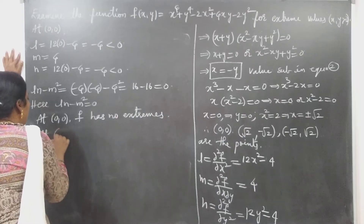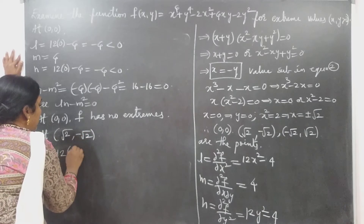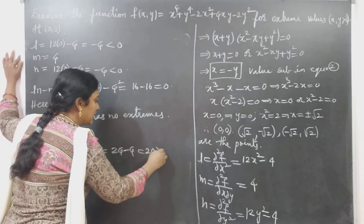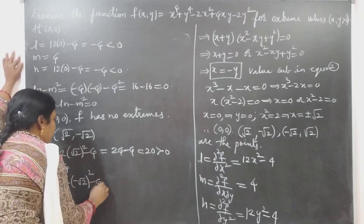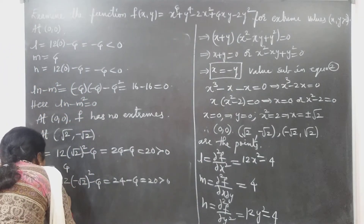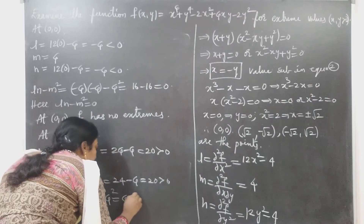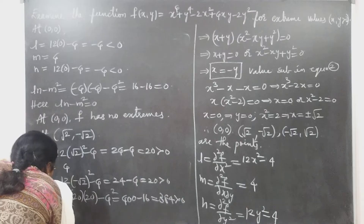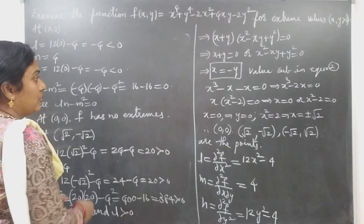Next, check at (√2, -√2): L = 12(√2)² - 4 = 24 - 4 = 20, which is greater than 0. M = 4. N = 12(-√2)² - 4 = 24 - 4 = 20, also greater than 0. LN - M² = 20 × 20 - 4² = 400 - 16 = 384, which is greater than 0. Since LN - M² > 0 and L > 0, the function has a minimum at (√2, -√2).